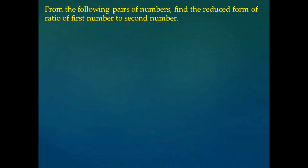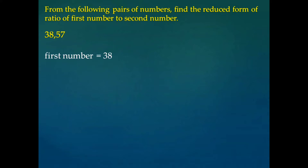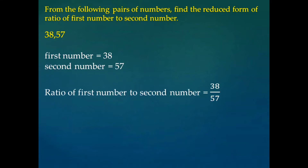Let us consider another example: 38 and 57. Here again two numbers are given. The first number is 38 and the second number is 57. We have to find the ratio of first number to the second, that is equal to 38 by 57. If we divide both numbers by 19, we get 19 twos are 38 and 19 threes are 57.